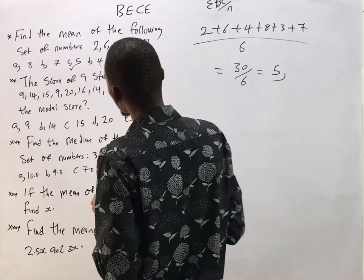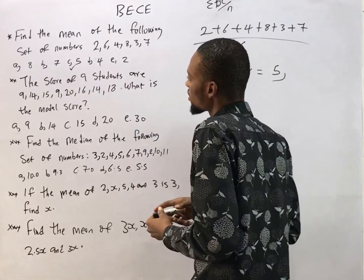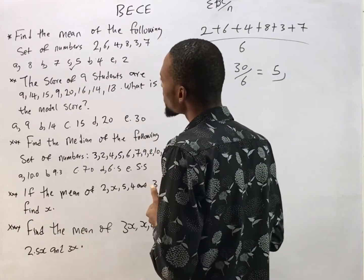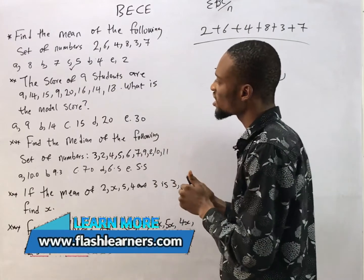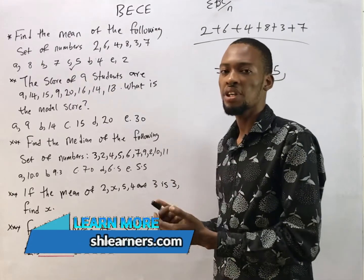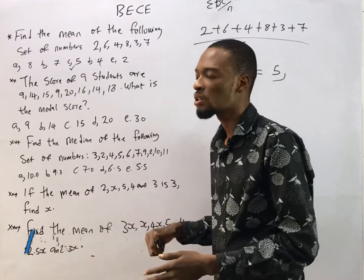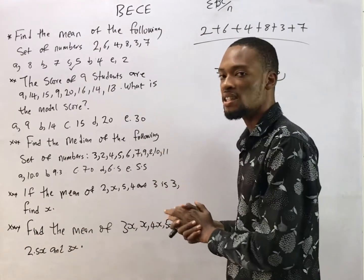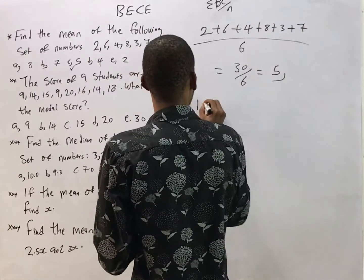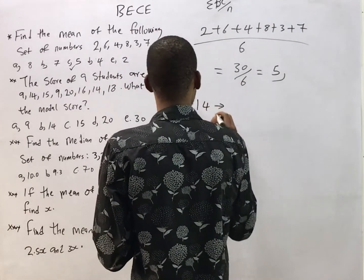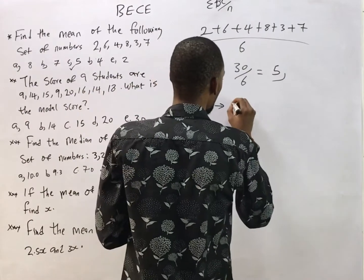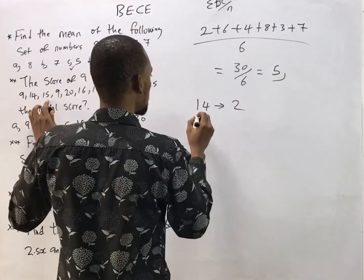So the mean of these numbers is simply 5 — that's option C. The second question says the scores of nine students are given. What is the modal score? The modal score is simply the score that appears most. So let's analyze the scores. The first score is 14 — how many times did 14 appear? One, two — 14 appeared two times.